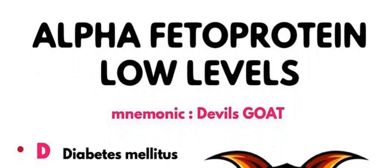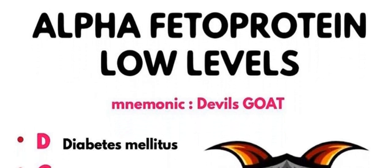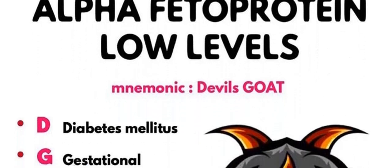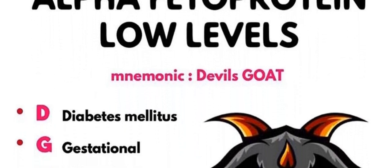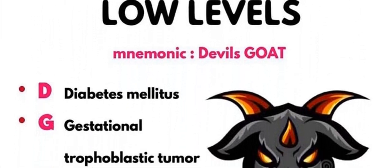Let's start. D is for Diabetes Mellitus — alpha-fetoprotein level is low. G is for Gestational diabetes or Gestational trophoblastic tumors — this is the condition in which the alpha-fetoprotein level is very low.